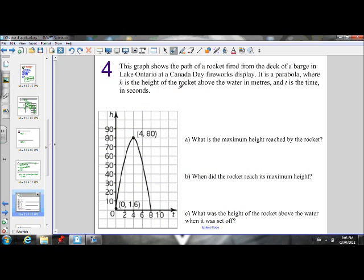Okay, last example. This graph shows the path of the rocket fired from the deck of the barge in Lake Ontario at a Canada Day fireworks display. It is a parabola where H is the height of the rocket above the water in meters, and T is the time.